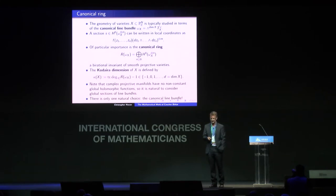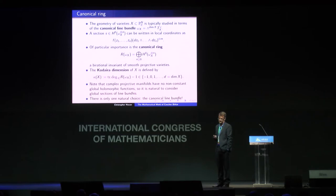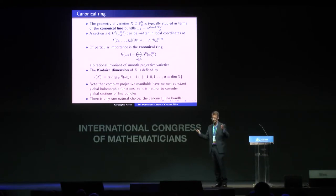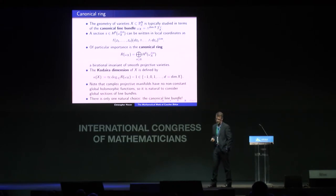One of the key players is what's known as the canonical ring. The canonical ring is a graded ring where each graded piece keeps track of all the sections of the corresponding tensor power of the canonical line bundle. Each graded piece is a finite-dimensional complex vector space, and these are determined uniquely by the class of the variety up to birational isomorphism. One of the invariants you can extract from the canonical ring is its Kodaira dimension, defined as the transcendence degree of the canonical ring over the complex numbers minus one. It's always an integer between minus one and d, where d is the dimension of X.